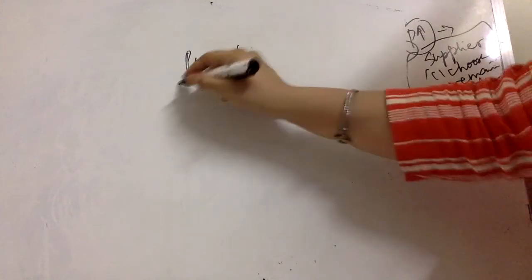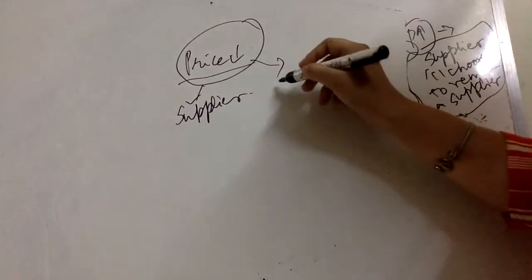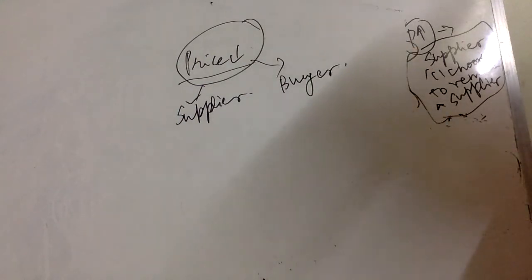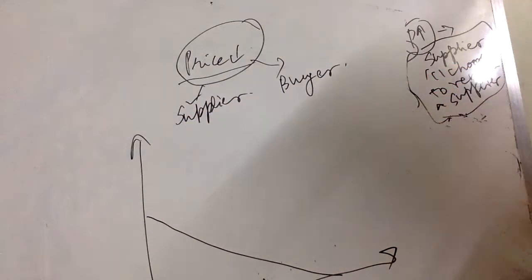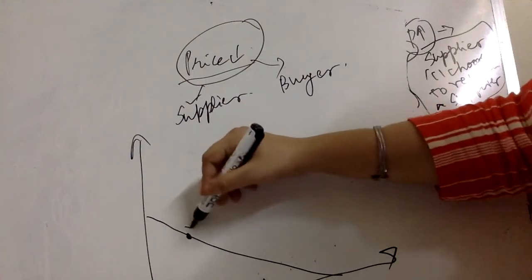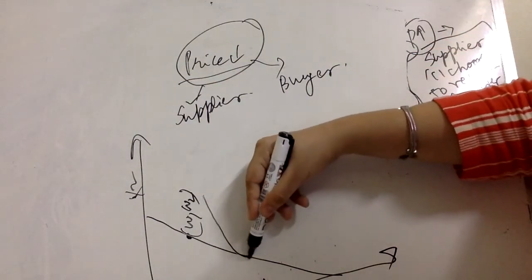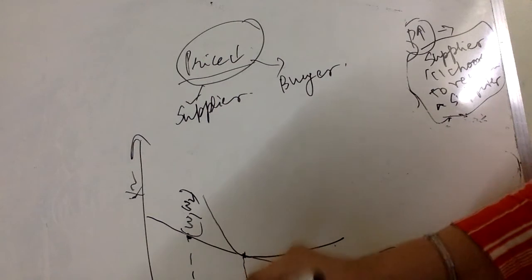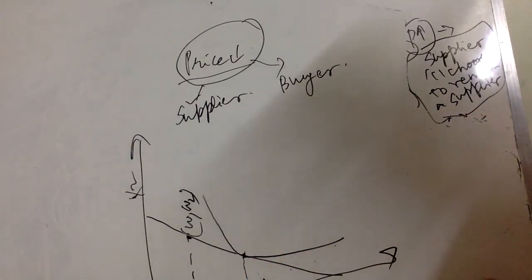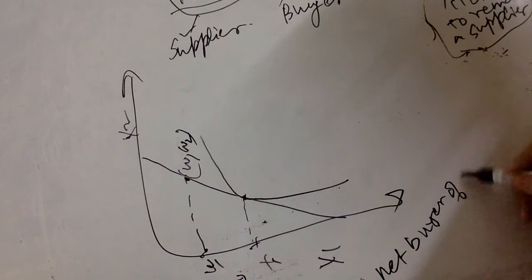Now consider the case when the price falls and the consumer is initially a buyer, and another case when the price rises and the consumer is initially a buyer. If the consumer is a buyer initially, the endowment (w1, w2) lies on the budget line, and the IC is tangent somewhere such that x1 exceeds w1, confirming the consumer is a net buyer of good one.